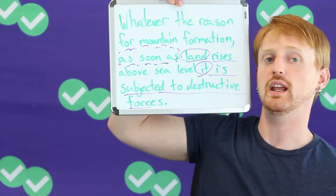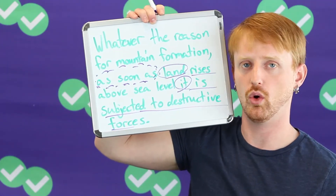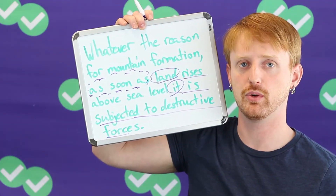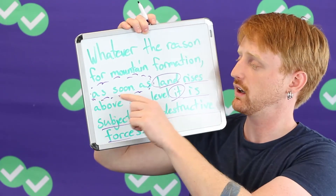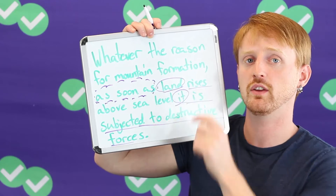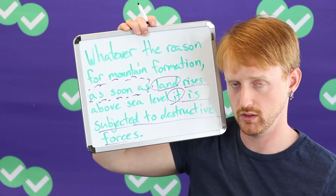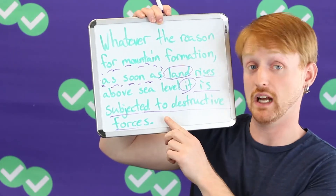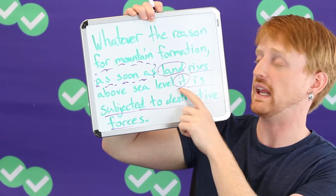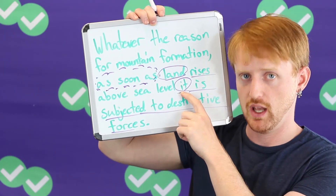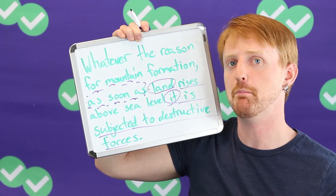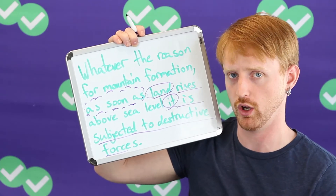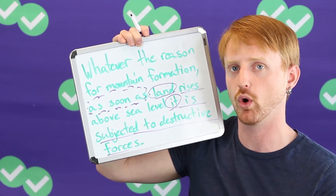'As soon as' is like 'when' or 'if' or 'because' — it makes the clause with 'land rises' dependent. On the other hand, the other clause is independent. Generally, the independent clause is the important clause — it is the more important one.